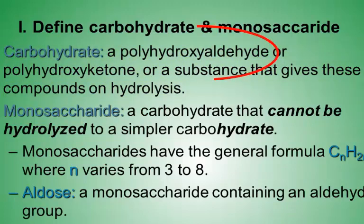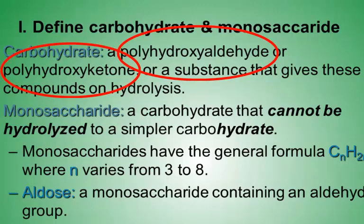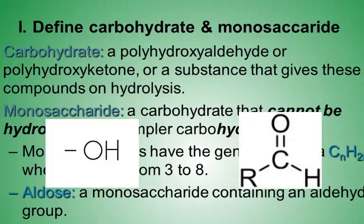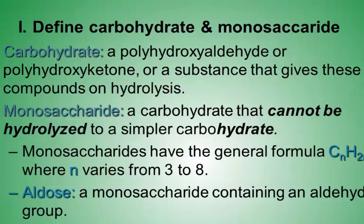Let's take a closer look at the two words polyhydroxy aldehyde and polyhydroxy ketone. Polyhydroxy implies many hydroxy groups. The hydroxy group may be more familiar to you as an OH group or an alcohol group, as we learned in organic chemistry. And you know the structure of an aldehyde — so we have a compound that has many hydroxy groups with an aldehyde.